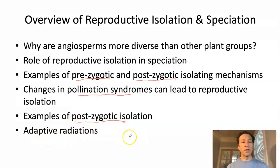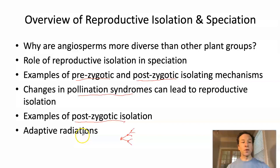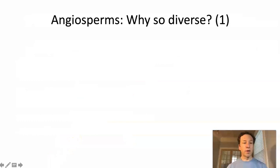Finally, we will talk about adaptive radiations. An adaptive radiation is when one species gives rise to new species that quickly give rise to more new species — the same process of divergence we've been thinking about, but this tends to happen quickly and the groups tend to give rise to many more species. We'll think about what characteristics of a species or of an environment might make it amenable to an adaptive radiation. Let's start with why angiosperms are so diverse.